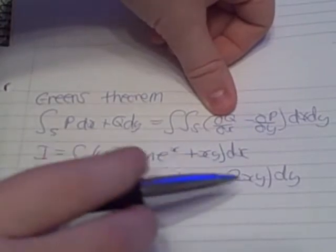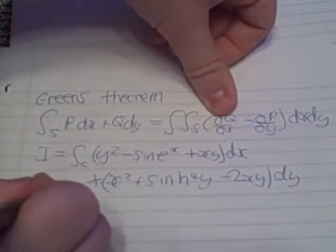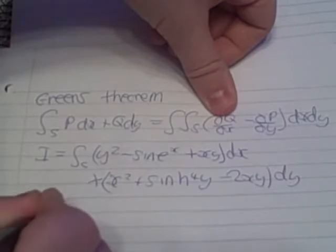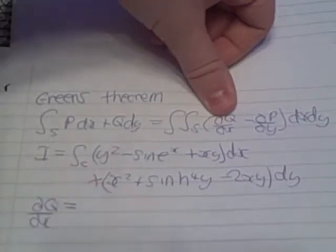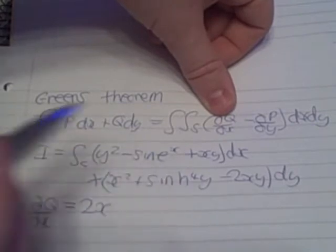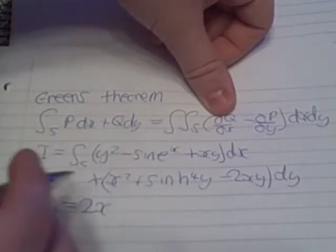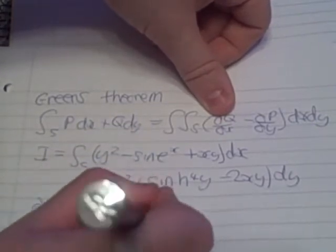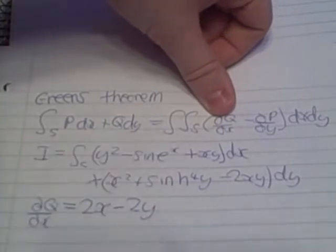So if we differentiate this with respect to x, we get 2x. No x is in here, so it looks messy, but it's not really at all. Minus 2y, because y is a constant. These are partial derivatives.